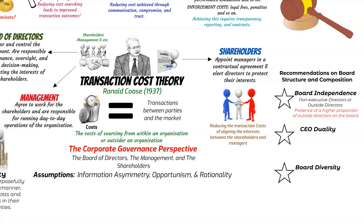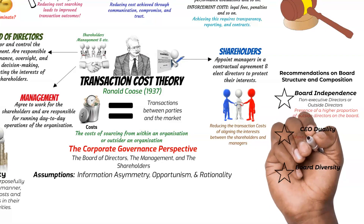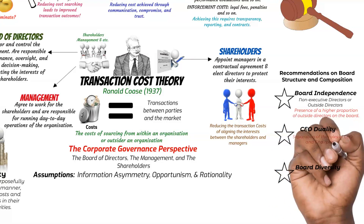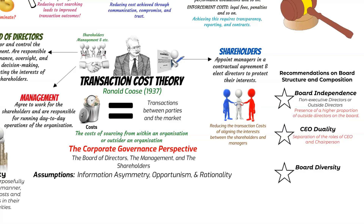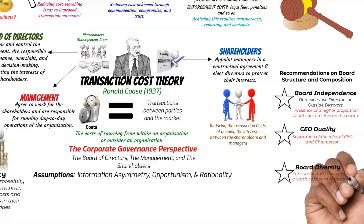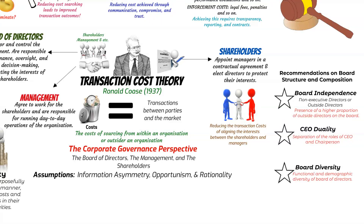The recommendation of eliminating CEO duality involves separating the roles of CEO and board chairperson. This separation creates a balance of power: the CEO handles management responsibilities, while the board chairperson oversees board functions and represents shareholders' interests. This, alongside a higher proportion of independent directors, mitigates the possibility of managerial opportunism and misalignment of interests between shareholders and management. Transaction cost theorists also recommend board diversity — a diverse board with directors possessing a wide range of expertise, industry knowledge, and skills. Diverse perspectives contribute to better decision-making and risk management, as directors can offer insights from various backgrounds and experiences.